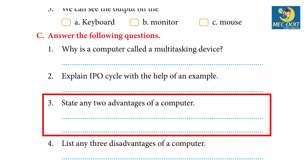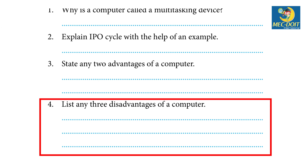3. State any two advantages of a computer. Answer: Speed — a computer is a very fast device, capable of processing a large amount of data in very less time. Storage — a computer has much more storage capacity than humans; it can store videos, text, and audio in large amounts. Reliability — a computer is a reliable machine and designed to make maintenance easy. 4. List any three disadvantages of a computer. Answer: Poor eyesight and lack of intelligence are disadvantages of a computer.